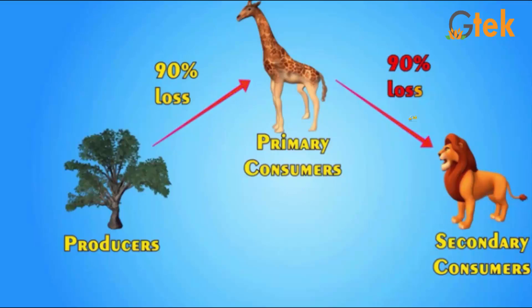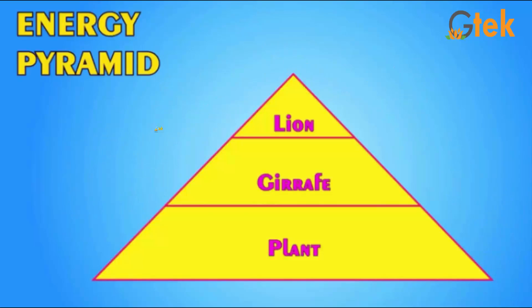Now let us see about the energy pyramid. Here the plant is the producer, giraffe is the primary consumer, and lion is the secondary consumer.